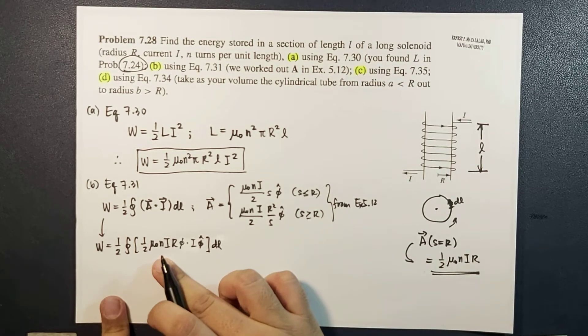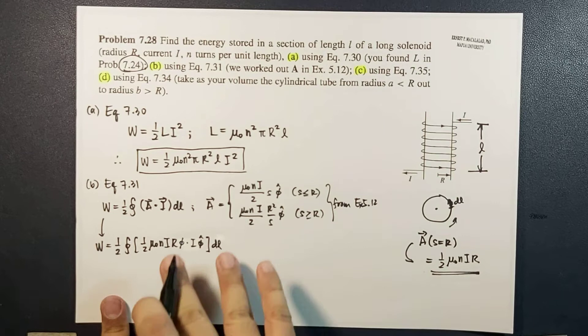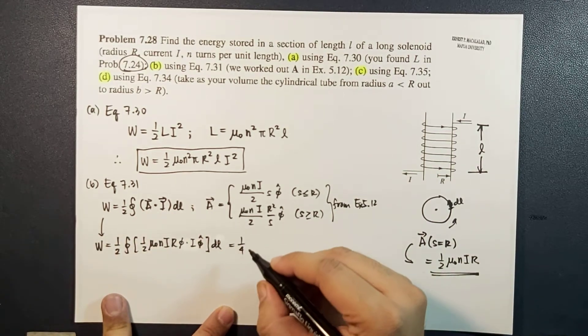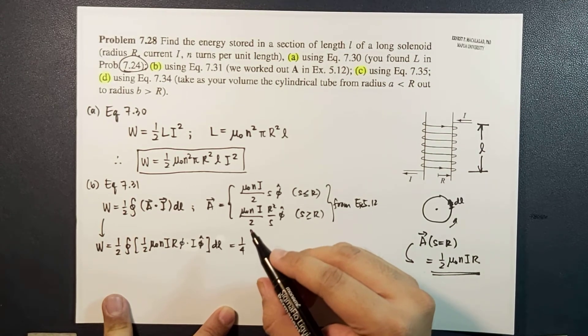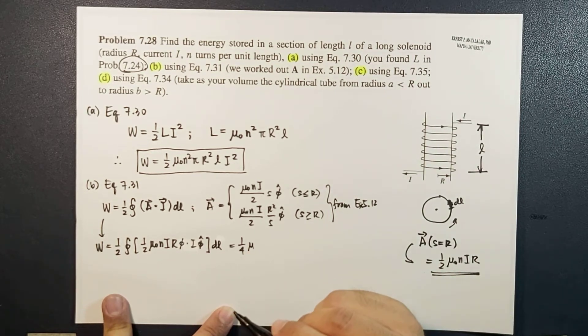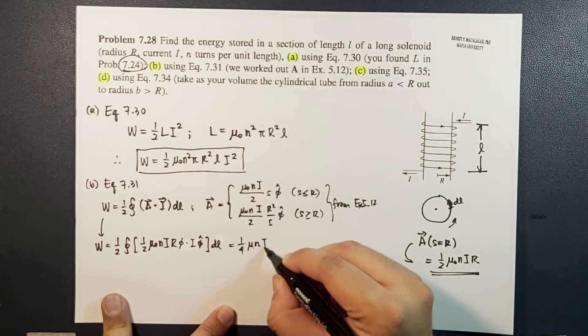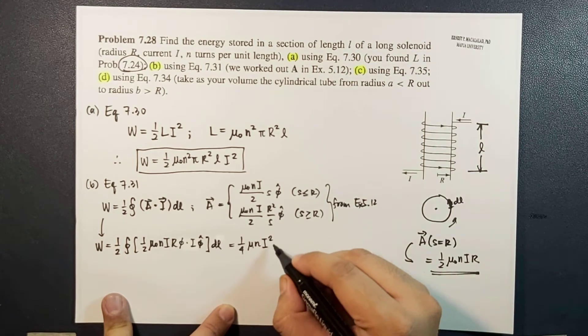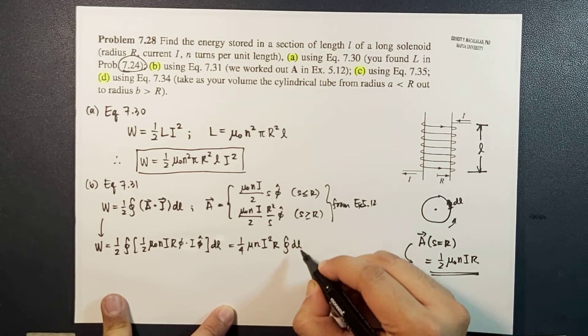φ̂ dot φ̂ is one, so this becomes a simple multiplication. One half μ₀nir are constants, so we take everything out. This is now equal to one fourth times μ₀ni²r times the closed integral of dl.